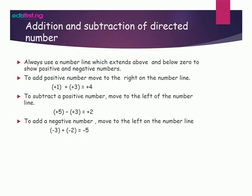Now, addition and subtraction of directed numbers. Always use a number line which extends above and below zero to show positive and negative numbers. To add a number, move to the right on the number line — for example, plus 1 plus 3 equals plus 4. To subtract a number, move to the left — for example, plus 5 minus plus 3 equals plus 2. To add a negative number, also move to the left — for example, minus 3 plus minus 2 equals minus 5.